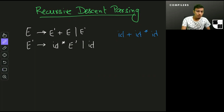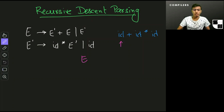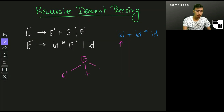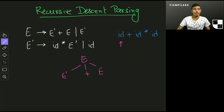Let's take the example I have and see how this works. I have a cursor at 'id' in the input, so my input is 'id plus id times id'. The symbol I start with is E. I use the first production rule for E and come up with E' plus E. At this point my leftmost symbol is still a non-terminal, which is E'.